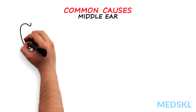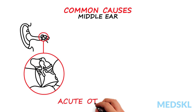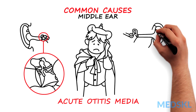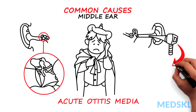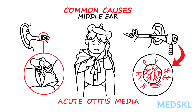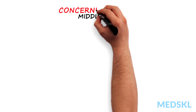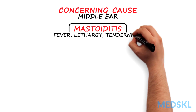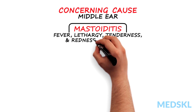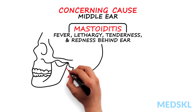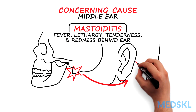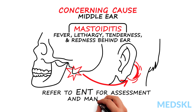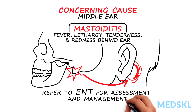Middle ear pain is most commonly due to acute otitis media. Think of this in a patient with fever, ear pain, and a bulging tympanic membrane on otoscopic examination. Mastoiditis can also cause ear pain — consider this in a patient with fever, lethargy, and tenderness and redness behind the ear with possible drainage. These patients should be referred to an ENT service for assessment and immediate treatment to prevent complications.